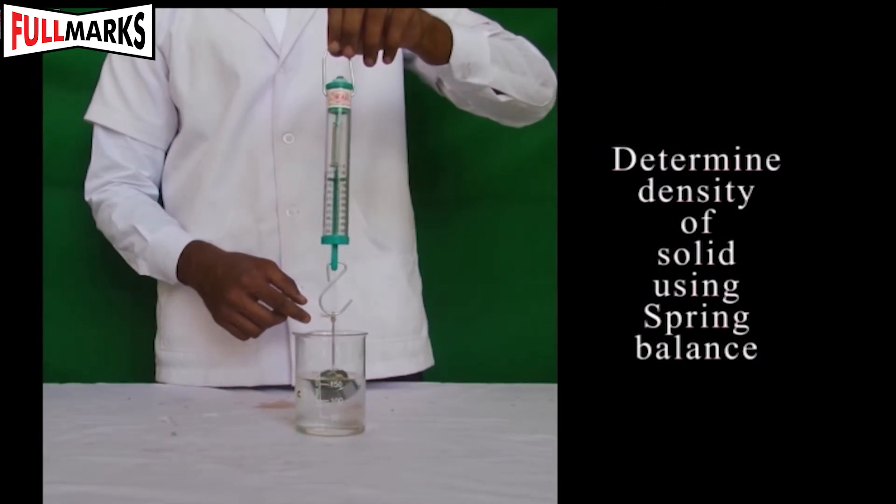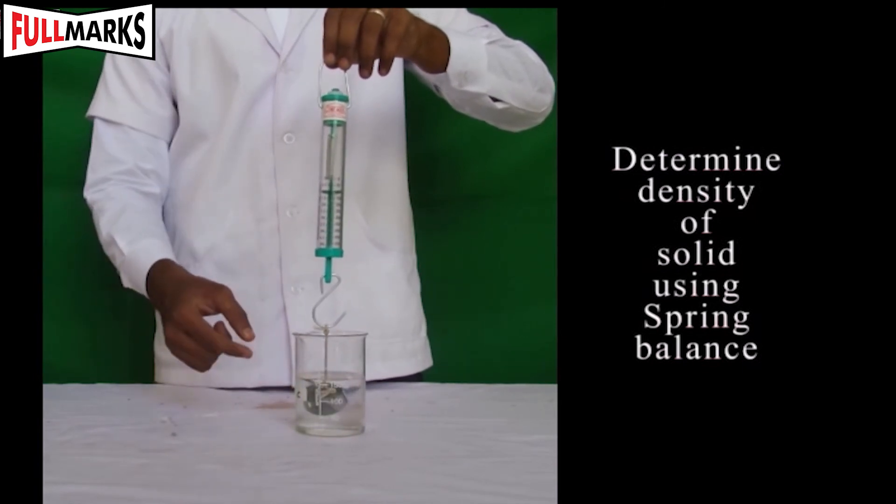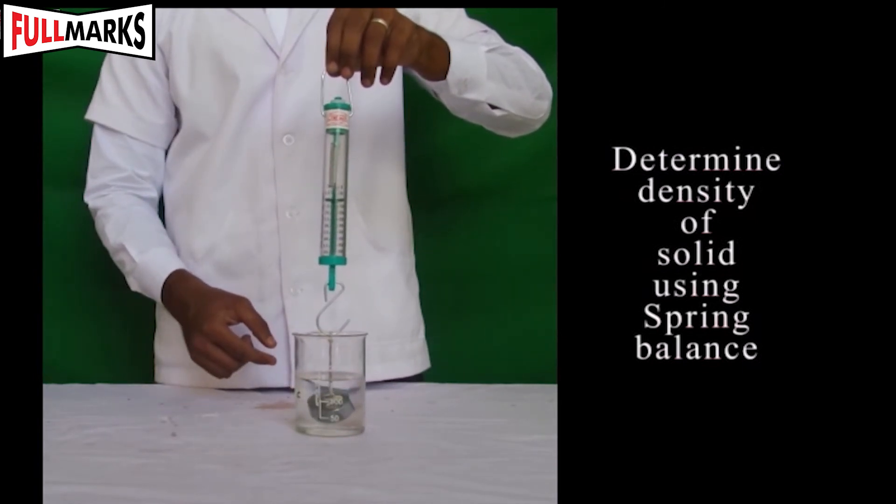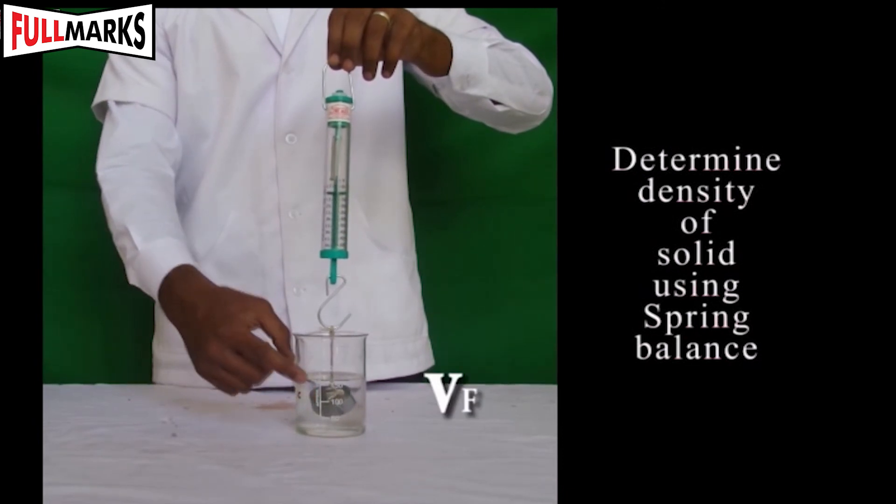Suspend the metal bob into the measuring cylinder with water. The bob should not touch the base nor the sides of the cylinder. The water level rises. Measure the increased water level.